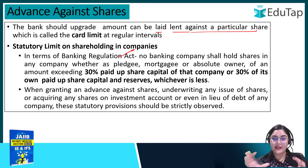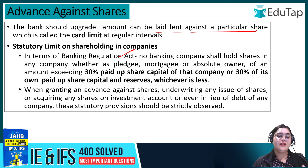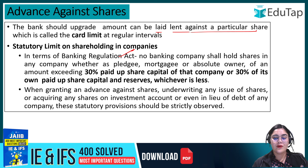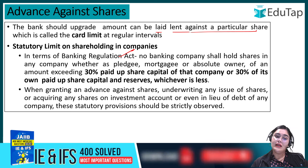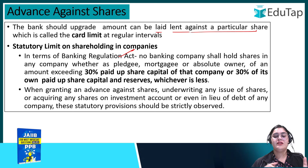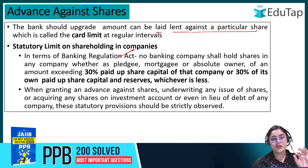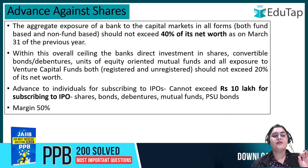This 30% provision covers all forms of exposure — whether shares given as advance collateral, underwriting, or investment. This 30% provision is strictly observed across all these categories.